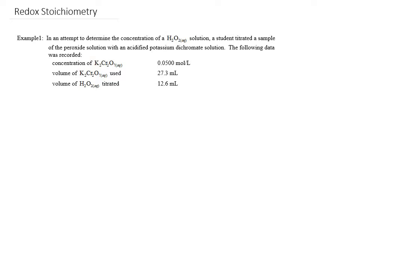In an attempt to determine the concentration of a hydrogen peroxide solution, a student titrated a sample of the peroxide solution with an acidified potassium dichromate solution, and then we were given the data. So we know the concentration of the dichromate, and we know the volume of both the dichromate and the hydrogen peroxide.